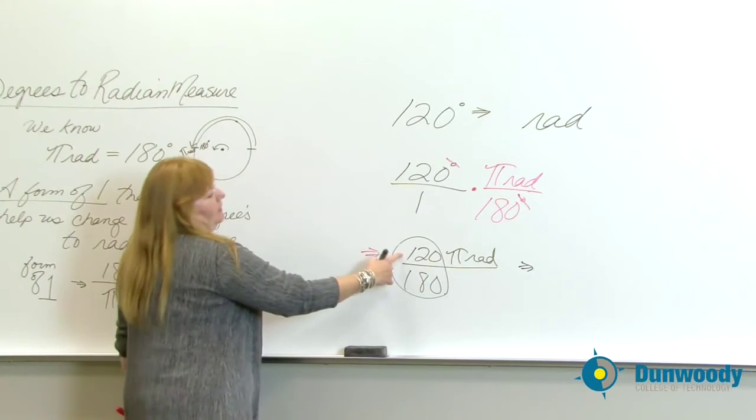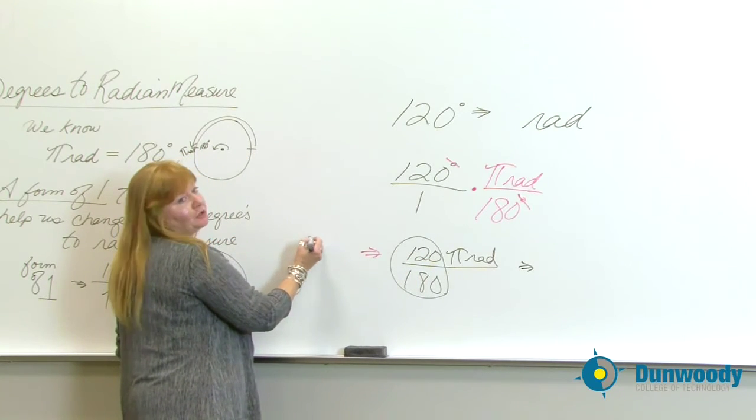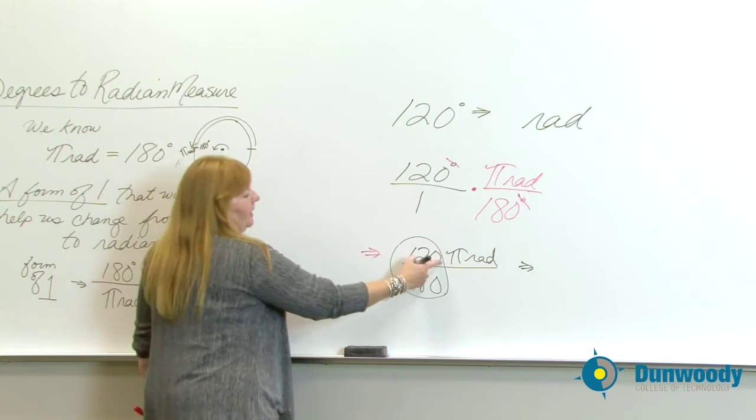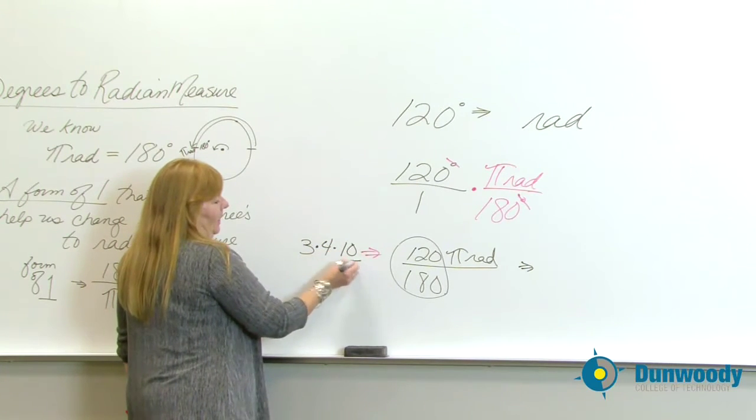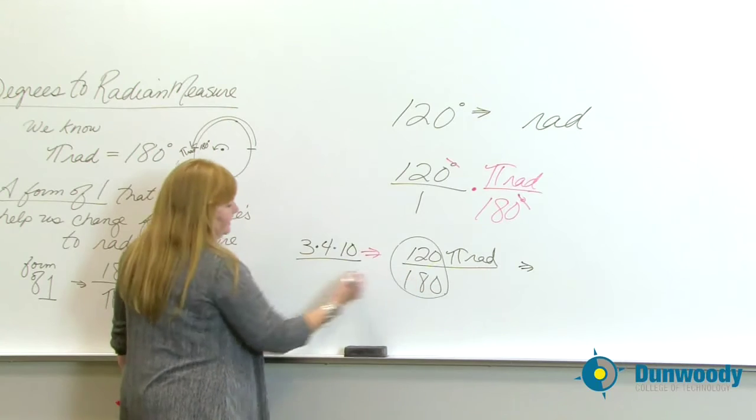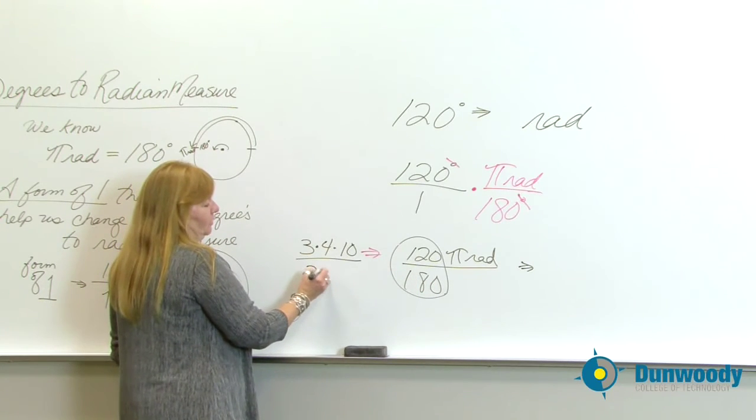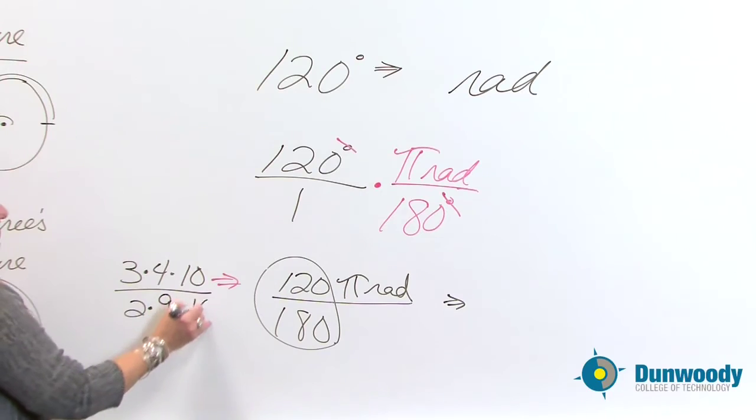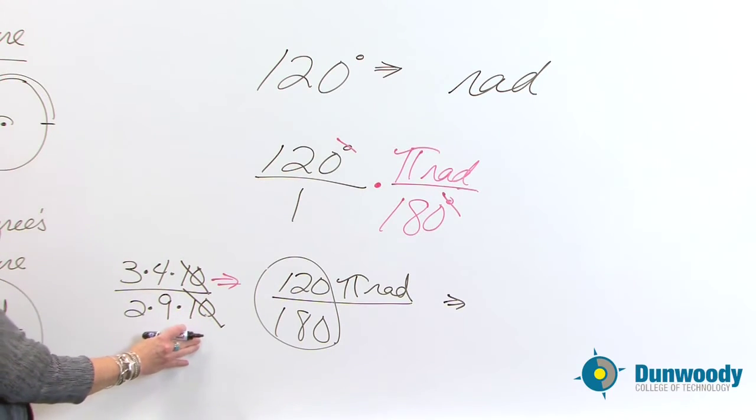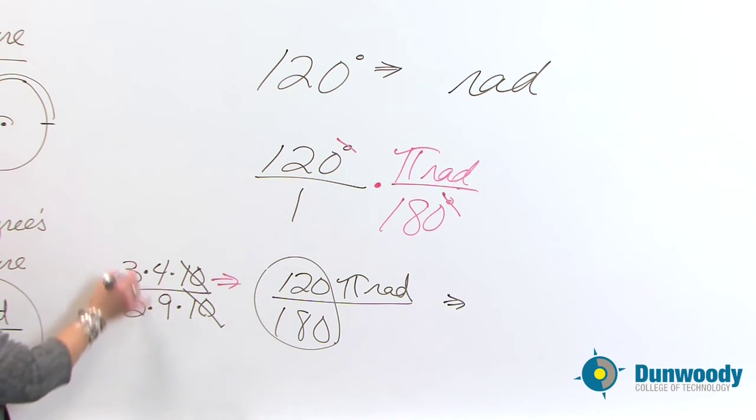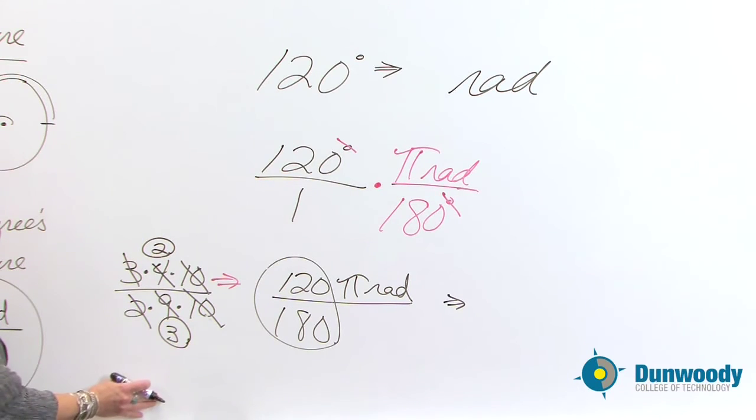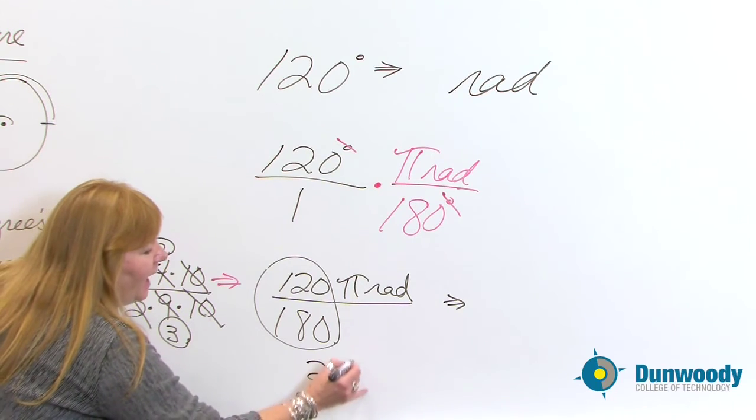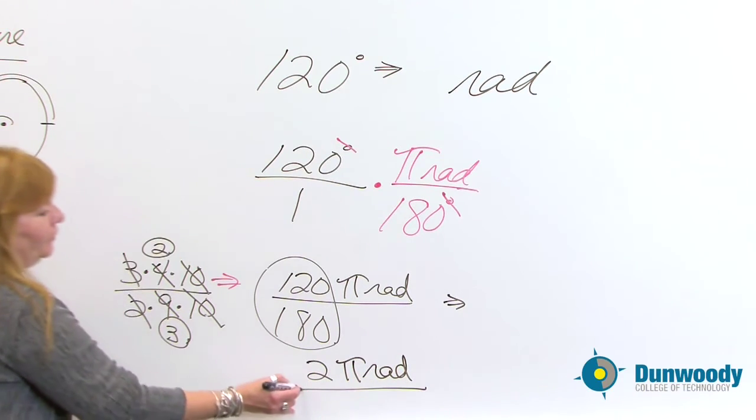I'm going to cancel the 3 out of 9. That gives me 3 here. Cancel the 2 here. That leaves me with 2 here. What am I left with? 2 over 3. And so I come over here. I have 2 pi radian over 3.